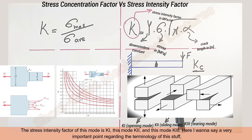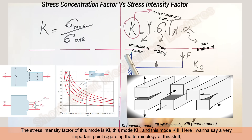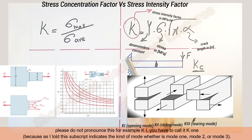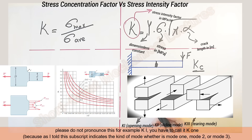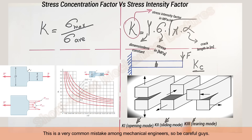I want to make a very important point regarding the terminology. Please do not pronounce, for example, K_I as 'K one' — that is wrong. You have to call it K_I because the subscript indicates the mode, whether it is mode 1, mode 2, or mode 3. This is a very common mistake among mechanical engineers, so be careful.